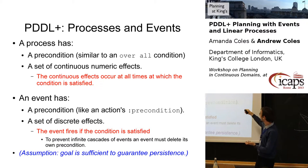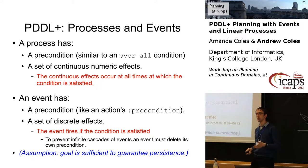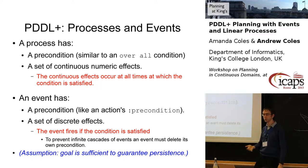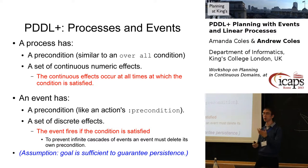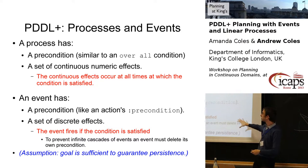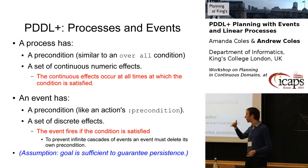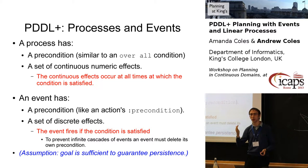So a process is something like a durative action which will automatically apply whenever its conditions are satisfied. Events are like instantaneous actions which will automatically apply if their condition is satisfied. We make two simplifying assumptions inherited from the validator. First, to prevent infinite cascades of events, each event will negate its own precondition, so it only happens once at each time point. Also, we assume that whatever goal you specify is sufficient to ensure that the goal you really want will persist — we just make this assumption that whatever happens, the goals you actually want are going to be met.